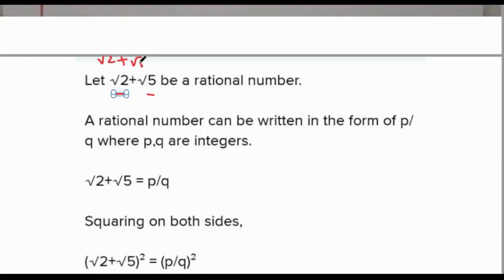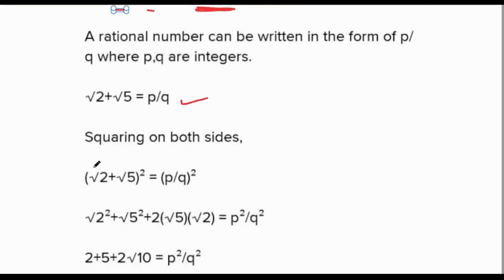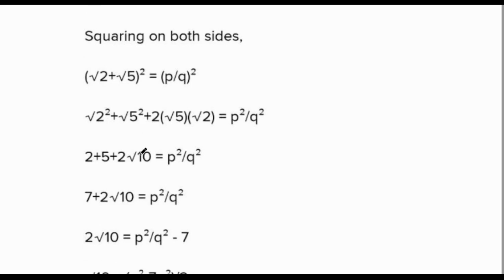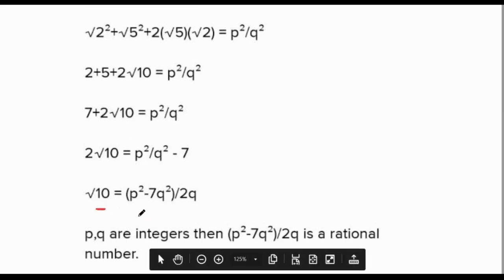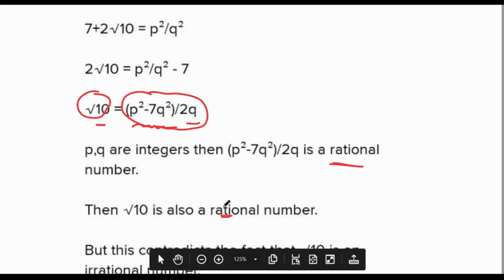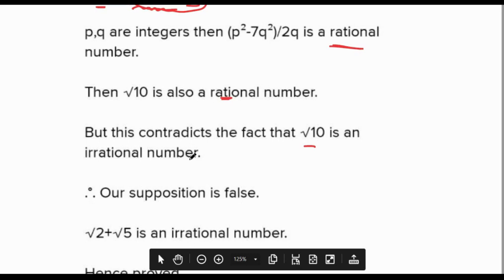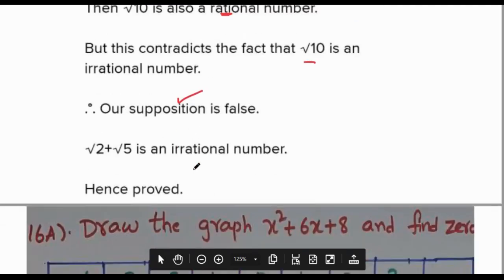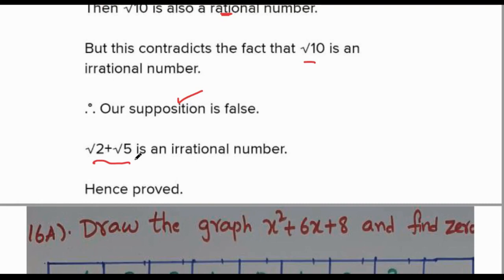To prove root 2 plus root 5 is irrational: assume it is rational, so root 2 plus root 5 equals p/q. Squaring both sides and rearranging gives root 10 equals (p squared minus 7q squared) divided by 2q. The right-hand side consists of integers, making it rational. But this contradicts the fact that root 10 is irrational. Therefore our assumption is false, and root 2 plus root 5 is an irrational number.